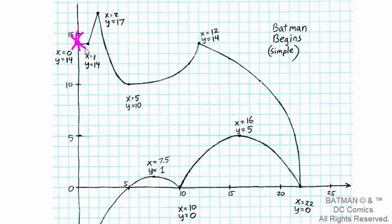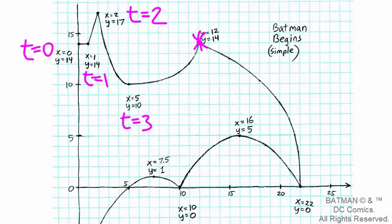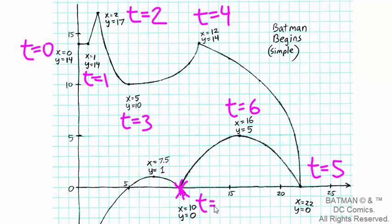then we'd label the t values as t equals zero, t equals one, t equals two, t equals three, t equals four, t equals five, t equals six, t equals seven, t equals eight, and finally just off the screen t equals nine at the tip of the tail.